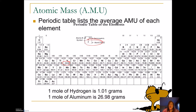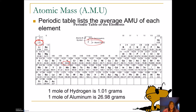For example, if I want to know how much one mole of hydrogen weighs, I go to the periodic table and find that it's 1.01 grams — which I'll round to 1. And if I want to know how much one mole of aluminum weighs, I go to the periodic table and see it's 26.98. So the atomic mass is the mass of one mole of an element in grams.